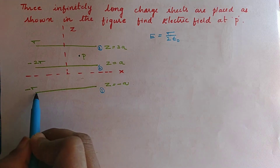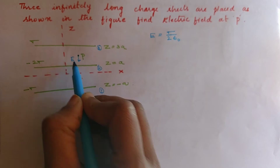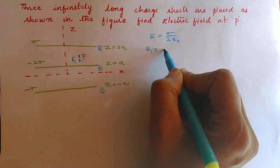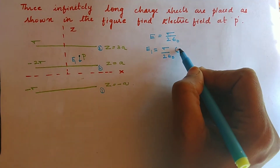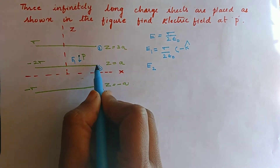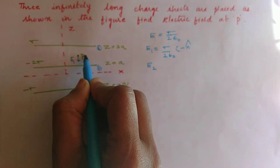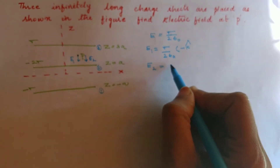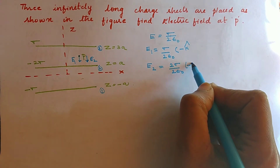Electric field due to the first plate: since it is negatively charged, the field is directed toward the plate. E1 has magnitude sigma by 2 epsilon naught, direction downward, so I write it as minus k-cap. The field due to the second plate, which is also negatively charged, is also directed toward it — E2 has magnitude 2 sigma by 2 epsilon naught, direction minus k-cap.